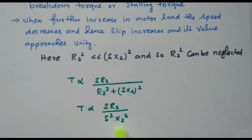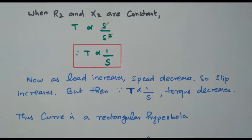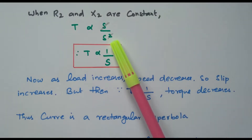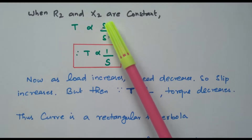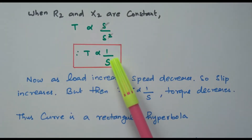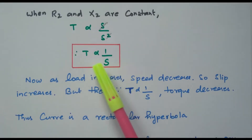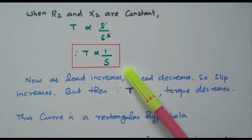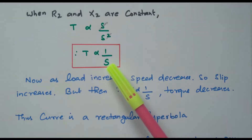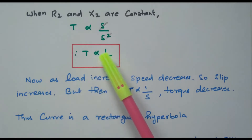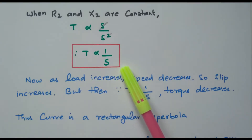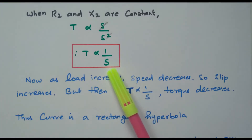Taking R2 and X2 as constants, we have S / S² which simplifies — one S cancels — giving T directly proportional to 1/S. That is why torque and slip are inversely proportional in the high slip region. In the diagram we clearly see that after maximum torque, during the high slip region, the torque decreases. In the low slip region, T is directly proportional to S; in the high slip region, T is directly proportional to 1/S.